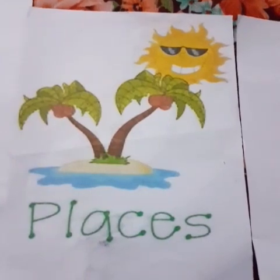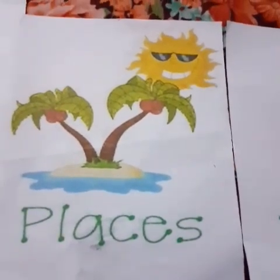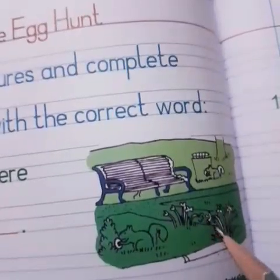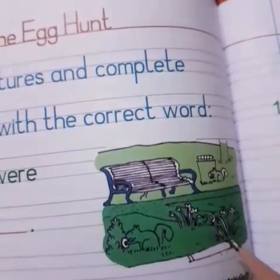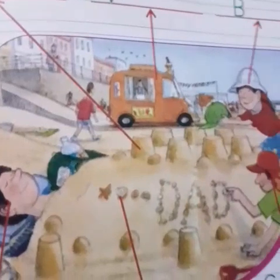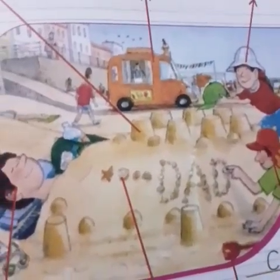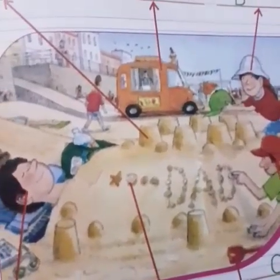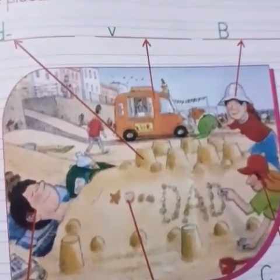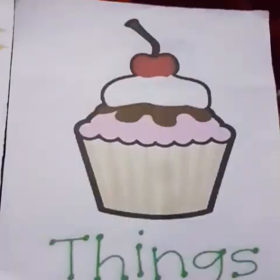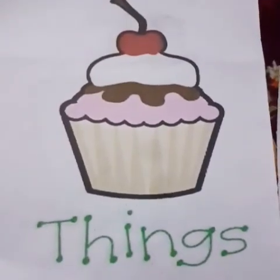A noun is also the name of places. For example, park — are you going to the park? Playground, beach — you can say these are nouns. Home, where do you live? Your school — so all of these are places, and prep class, everything around us has a name.